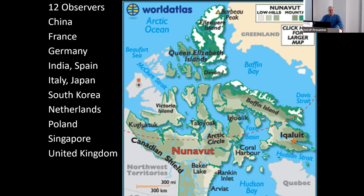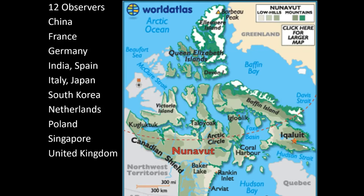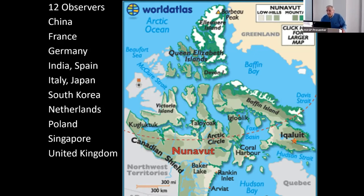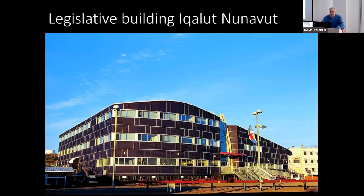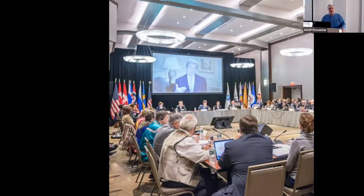You have those twelve countries, but all of these are added as observers — they want to be part of what's going on in the Arctic because it is a rich region as far as resources are concerned. Here is the location in Nunavut of the Iqaluit meeting place. It has a decent building or two where they can meet — this happens to be the church located there. The legislative building is also here, and it's part of the places where the council will meet, though that's not the only place.